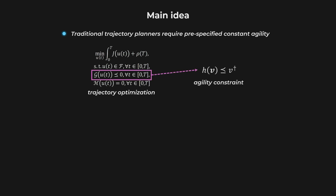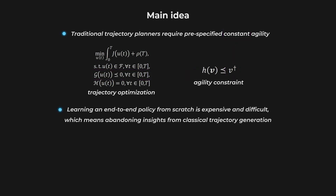The agility level is expressed by a constraint, which is often conservatively set as constants by humans when deploying. Purely data-driven approaches do not provide formal safety guarantees, and the training is expensive. In practice, policies learned from scratch are not yet capable of handling the same complex scenarios as state-of-the-art model-based planners.